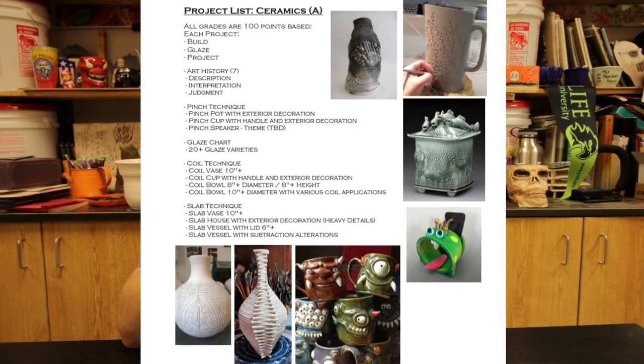Number one: a project list. On the list of projects, it comes in two pages. On one page we have the project list — all the stuff that students are required to do in my class. At the top, we have a simple breakdown for each project. Students are getting three different sections of the grade: the build grade, the glaze grade, and the project grade — the overall, how everything came together.